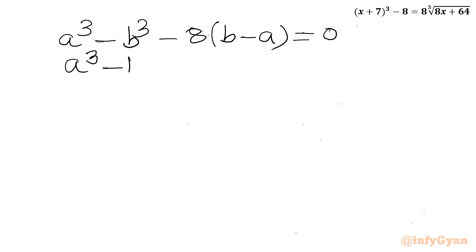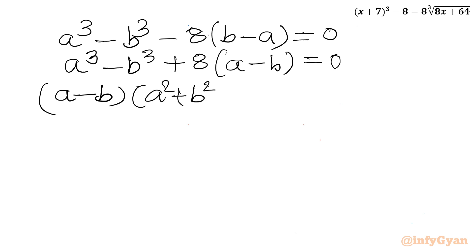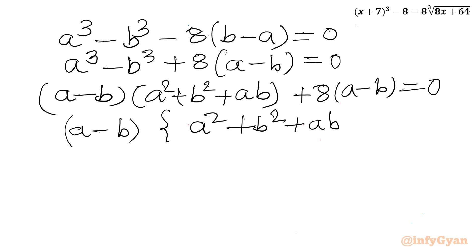Applying the difference of cubes formula, a³ - b³ = (a - b)(a² + ab + b²), and factoring 8(a - b), we get (a - b)(a² + ab + b²) + 8(a - b) = 0. Taking (a - b) as common factor: (a - b)(a² + b² + ab + 8) = 0.